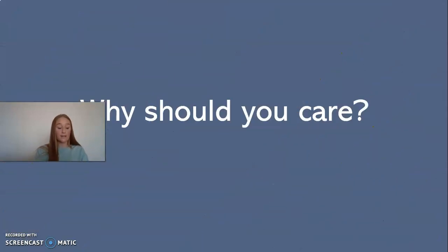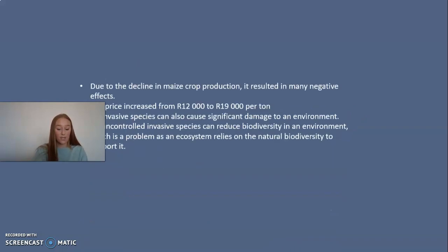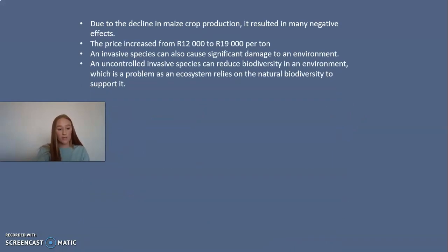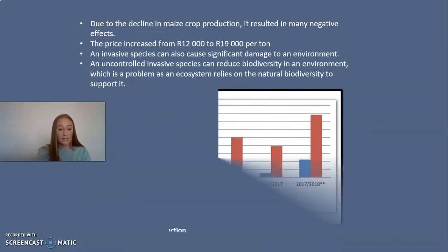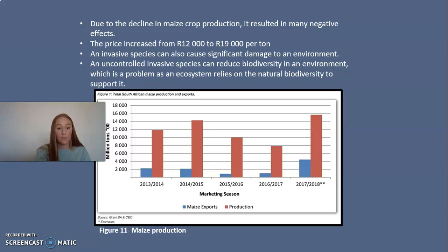Due to the decline in maize crop production, it resulted in many negative effects. The price of maize per tonne increased due to the decline in yield, rising from 12,000 rand to 19,000 rand per tonne — a 58% increase. This price increase impacted many people who rely on maize as a cheap source of food, leaving those living in poverty unable to provide food for their families.